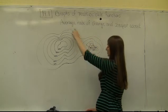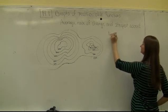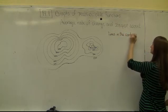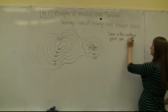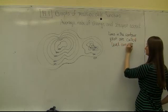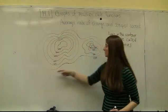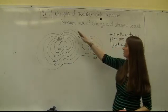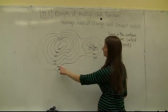The lines in the contour plot are called level curves. They're called that because it's a curve along a flat plane, and it's level — meaning the height is exactly the same all the way around that curve.